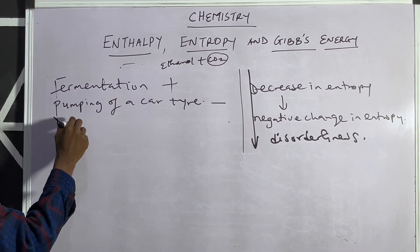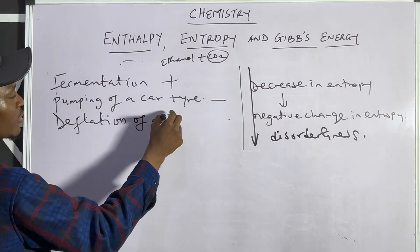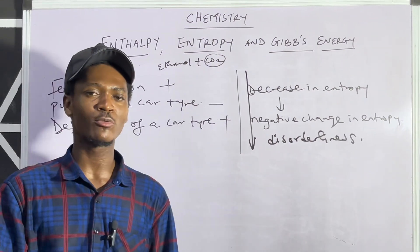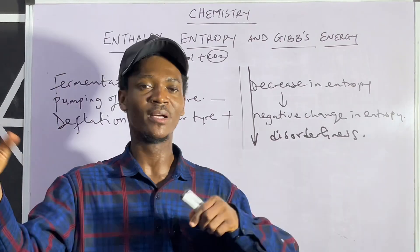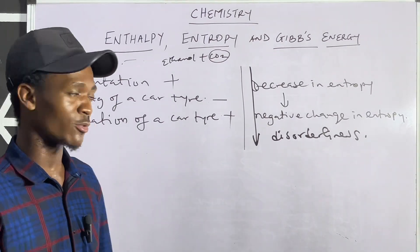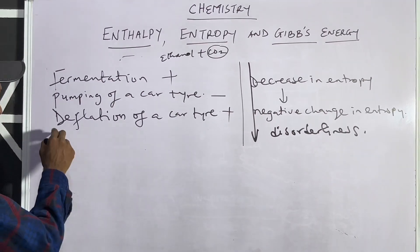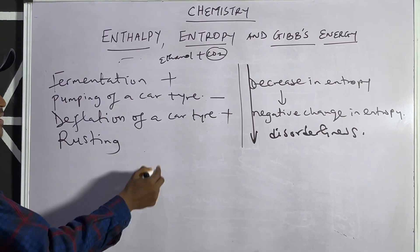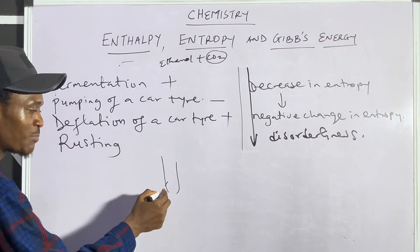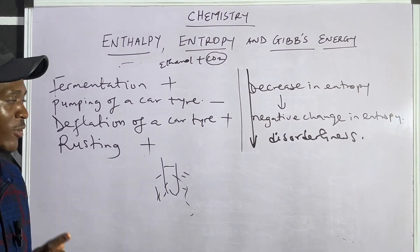What about deflation? Deflation of a car tire is opposite to pumping. That should be positive. Why? The moment you deflate a car tire, gases will have freedom and start moving in random motion — disorderliness has been restored. That should be positive entropy. Then what about rusting? When iron has not rusted, it's in orderliness. But the moment it rusts, it scatters. So rusting should be positive entropy.